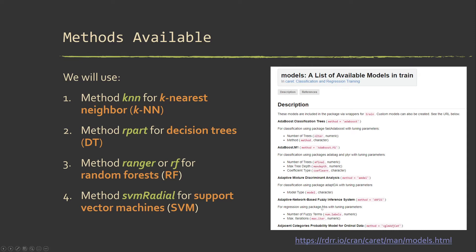In this course we'll predominantly look at k-nearest neighbor using the KNN method, decision trees using rpart, random forest using Ranger or RandomForest, and SVM radial — support vector machines using a radial basis function kernel — with the SVMRadial option connecting to KernLab. These are just a subset of the large number of models available. After going through this process, you should be able to implement other models fairly easily.